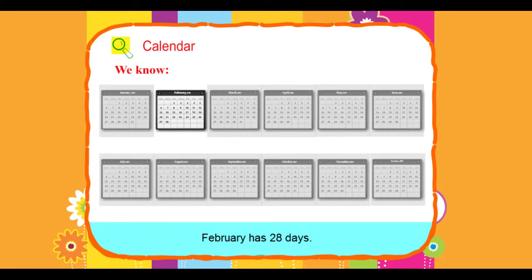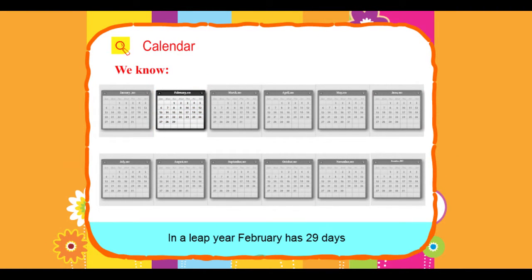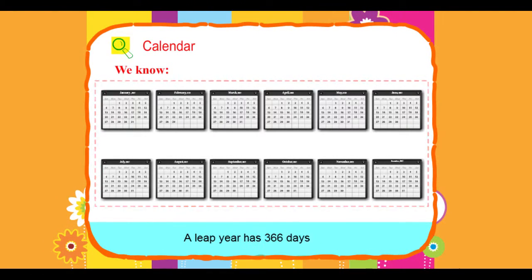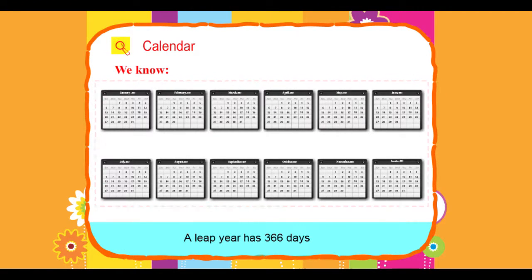February has 28 days. In a leap year, February has 29 days. There are 365 days in a year. A leap year has 366 days.